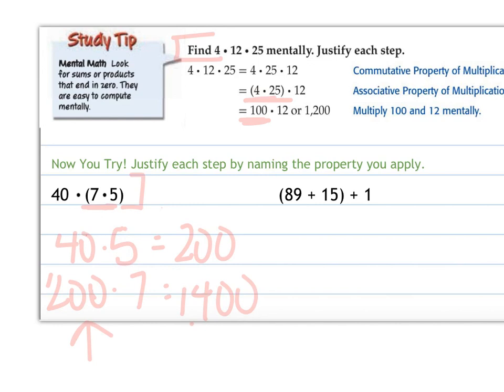And then for this one, 89 plus 15 plus 1. If I add 1 to 90, it's a lot easier for me to add things to. So 89 plus 1 would be 90 plus 15 and then I would get 105.